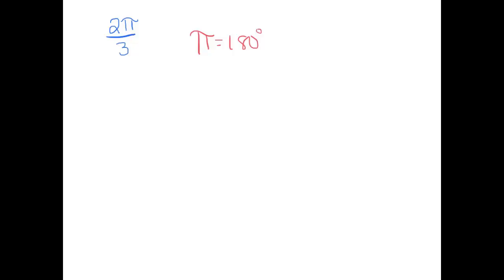So this is really saying two-thirds of π. So what is two-thirds of 180? Well, that's much easier to think of as 180 over 3, which is 60. So this becomes 2 times 60, which is 120 degrees.